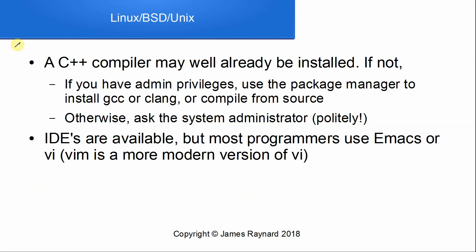On Linux, BSD, and other versions of Unix, these systems usually come with a C compiler, and it may well also compile C++. If you're happy with it, you can just use it. If not, and you have the rights to install software on your computer, you can use the package manager to install either GCC or CLANG, or download the source code and compile it from source. If you don't have admin privileges — for example on a work or college computer — you'll have to ask the system administrator, and try to be nice so maybe they'll say yes.